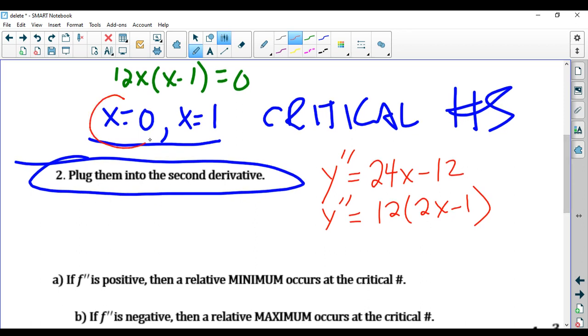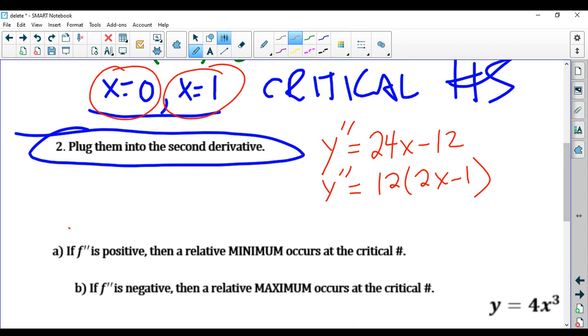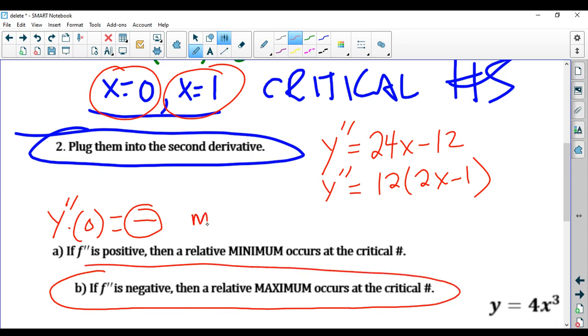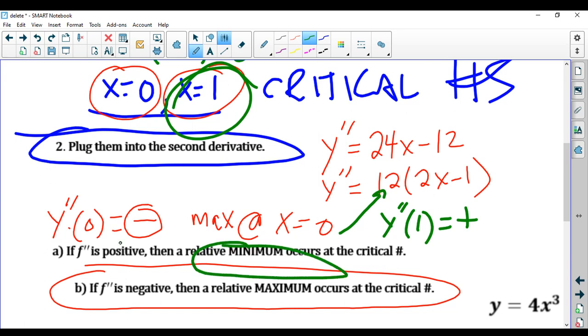For the second derivative test, all you need to do is now plug these two critical numbers in. So when you plug in x = 0 into the second derivative, you will get 12 times negative one, which is negative. So there's a maximum at x = 0. When you plug in the next critical number 1 to the second derivative right here, you will get 12 times (2 - 1), which is positive. So this is obviously positive, which means we have a minimum.